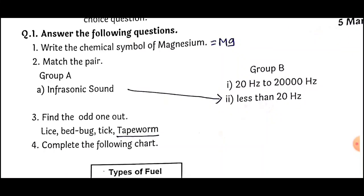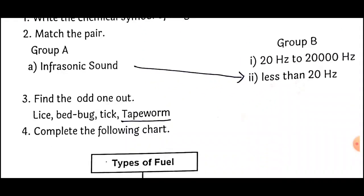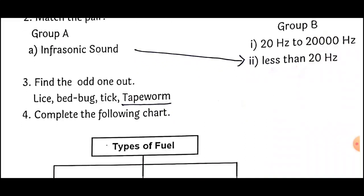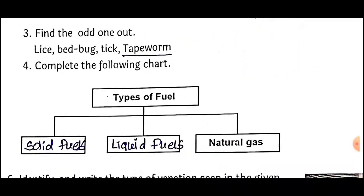Question Number 3: Find the odd one out — the options are Lice, Bedbug, Tick, and Tapeworm. The odd one out is Tapeworm. Question Number 4: Complete the following chart — Types of Fuel. Natural Gas is already given. The other two types of fuels are Solid Fuels and Liquid Fuels.